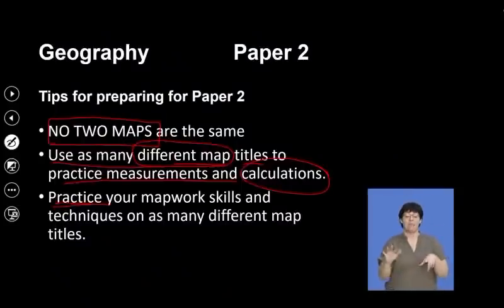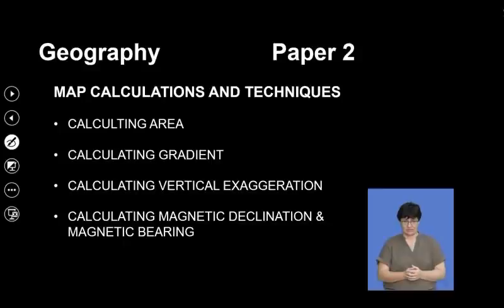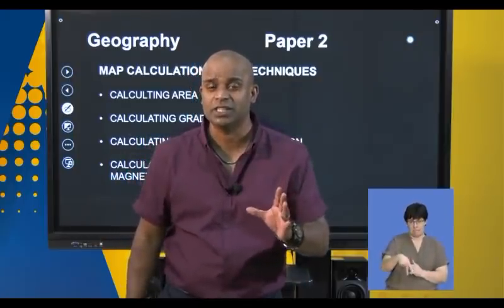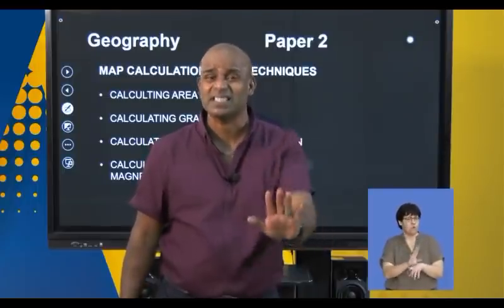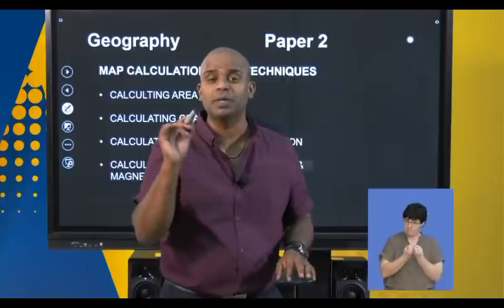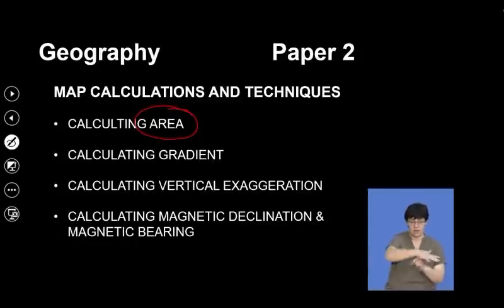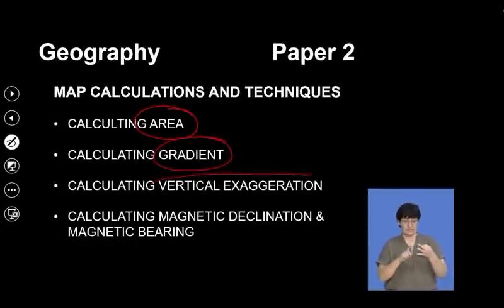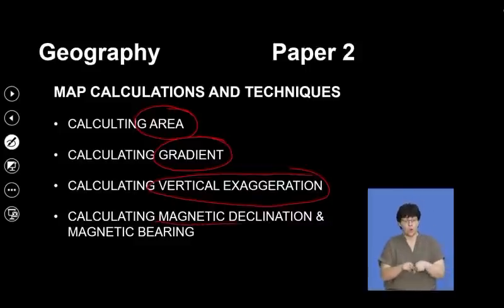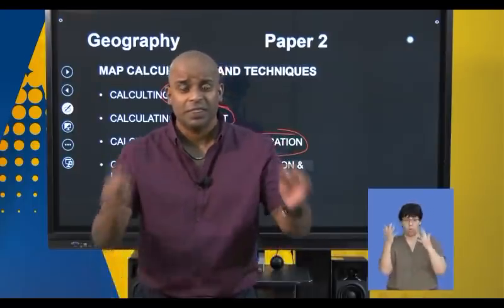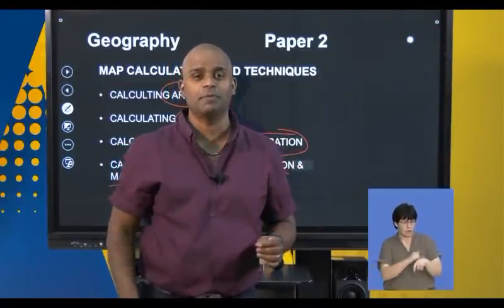Remember, practice makes perfect. For today's lesson, we're going to be focusing on Question 2 of Geography Paper 2 — map work calculations and interpretations. We're going to practice as many calculations as possible so you could be better prepared. We will focus on the following: calculating area, calculating gradient, calculating vertical exaggeration, as well as calculating magnetic declination and magnetic bearing. These are the calculations that make or break you in Question 2.